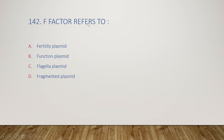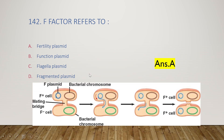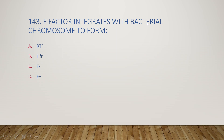The next question: F factor refers to fertility plasmid, functional plasmid, flagella plasmid, or fragmented plasmid? F factor represents fertility — answer is option A. An F-plus plasmid (fertility plasmid) can transfer DNA from one cell to another by conjugation through pili. A copy of the plasmid DNA is transferred from an F-plus cell to an F-minus cell, so both cells become F-plus.